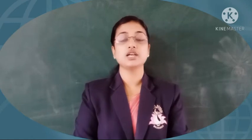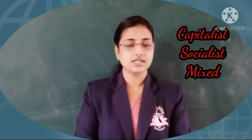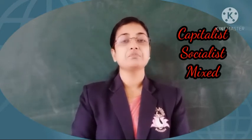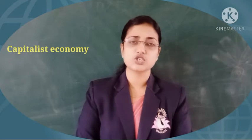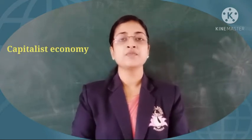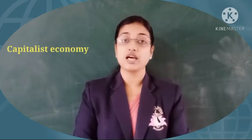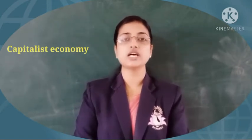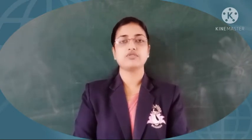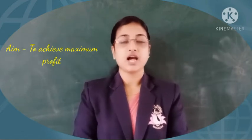According to political and economic beliefs, each country adopts different types of economic systems. There are three types: first, capitalist economy; second, socialist economy; and third, mixed economy. In a capitalist economy, the means of production — how to produce, what goods to produce, and pricing decisions — are owned and controlled by private individuals. The main aim is to achieve maximum profit.